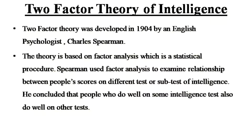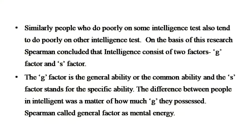Coming to the first theory, that will be two-factor theory of intelligence. Two-factor theory was developed in 1905 by an English psychologist, Charles Spearman. The theory is based on factor analysis, which is a statistical procedure. Spearman used factor analysis to examine the relationship between people's scores on different tests or subtests of intelligence. He concluded that people who do well on some intelligence tests also do well on other tests, and people who do poorly on some intelligence tests also tend to do poorly on other intelligence tests. On the basis of this research, Spearman concluded that intelligence consists of two factors: G-factor and S-factor.